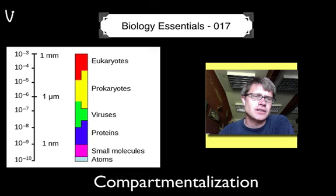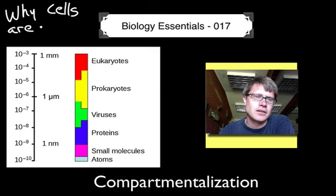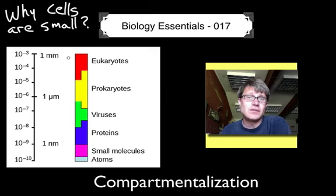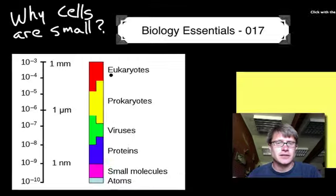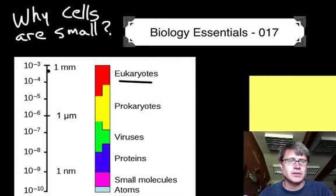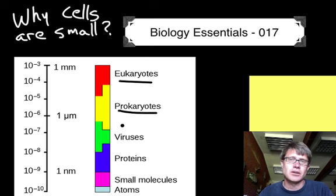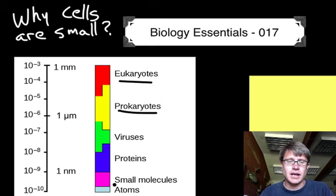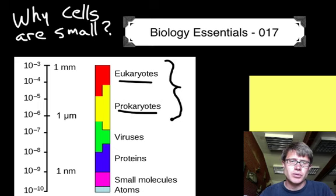A better way to start is to talk about why cells are small, and then why are cells not infinitely small. Let's look at the size of some of these cells. Eukaryotic cells are mostly a little bit under a millimeter in length. Prokaryotic cells — things like bacteria and archaea — are on the order of about a micrometer. Small things like atoms are going to be on the level of a nanometer. But life — eukaryotes and prokaryotes — are going to be right in this kind of sweet spot.